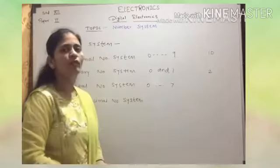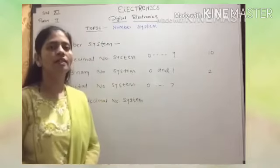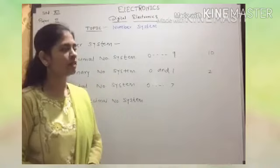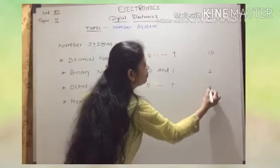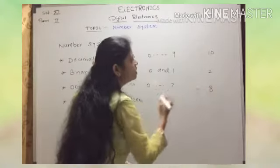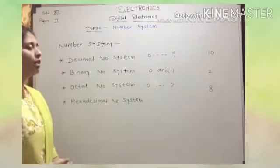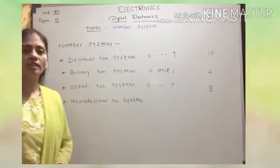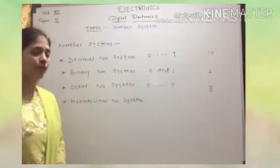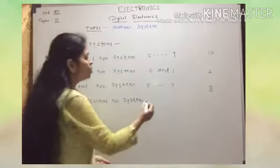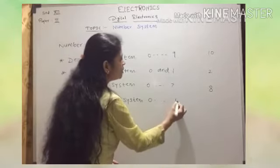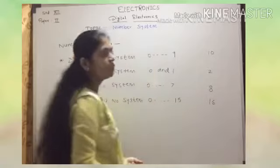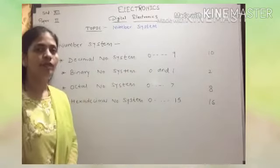The octal digits are 0, 1, 2, 3, 4, 5, 6, 7 — meaning a total of 8 symbols. That's why the radix of the octal number system is 8. In the hexadecimal number system, we are using symbols 0 to 15, meaning a total of 16 symbols. That's why the radix of the hexadecimal number system is 16.